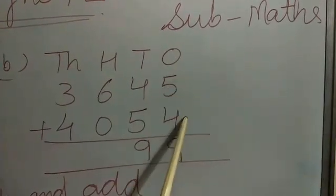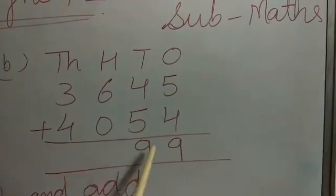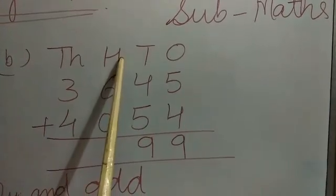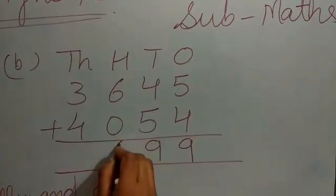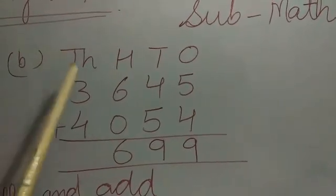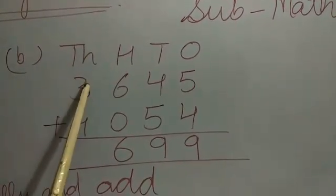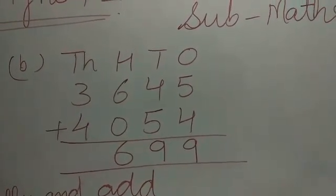So see, 1s place, 5 plus 4 is 9 and 4 plus 5 is 9. Come on 100 place, 6 plus 0 is 6. Come on 1000 place, 3 plus 4 is 7.